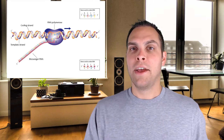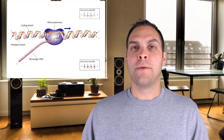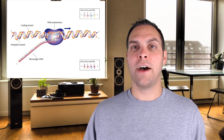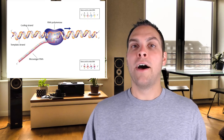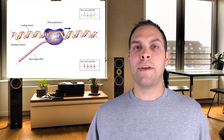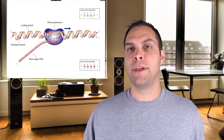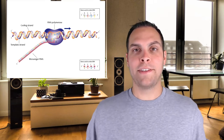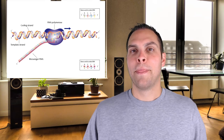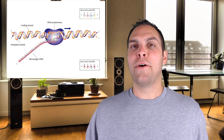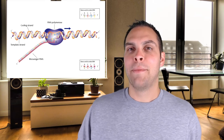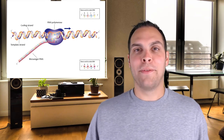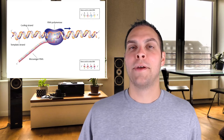This messenger RNA is produced by RNA polymerase until RNA polymerase reaches the end of the gene. RNA polymerase comes off, and that messenger RNA can then go on and be translated into a protein. But this simplified description leaves several important questions to be answered.